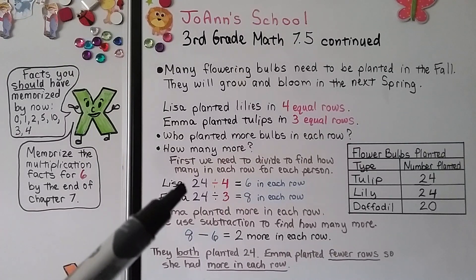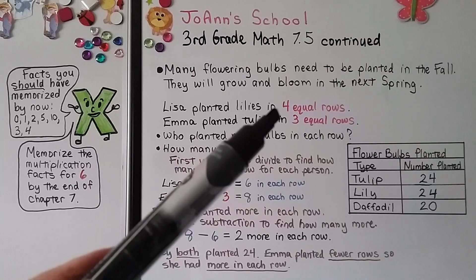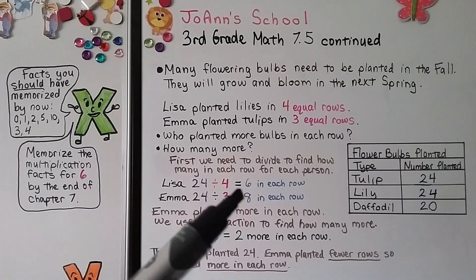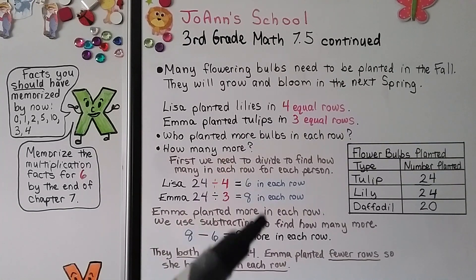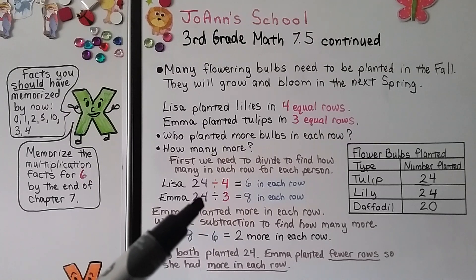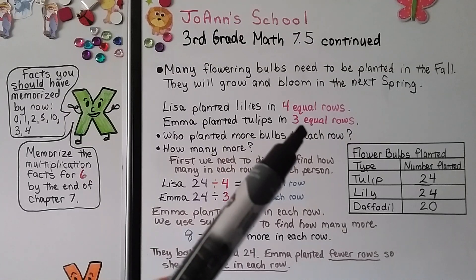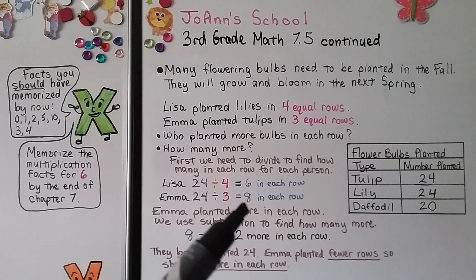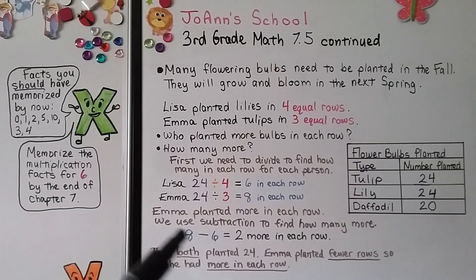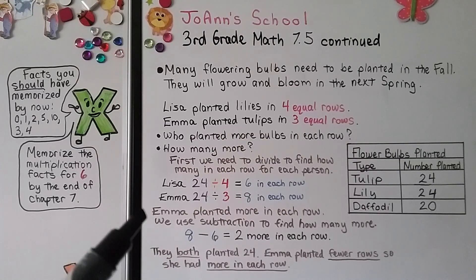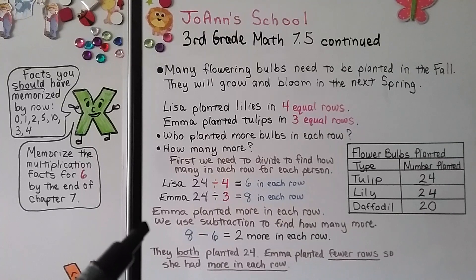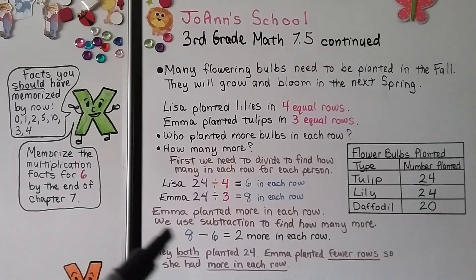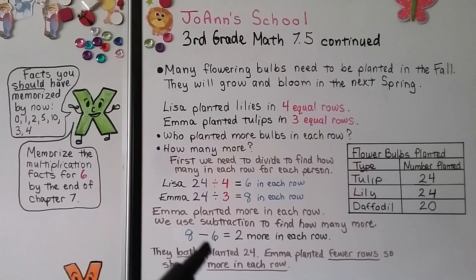First we divide to find how many in each row for each person. Lisa: 24 divided by 4 rows equals 6 in each row. Emma planted 24 in 3 equal rows, that's 8 in each row. So Emma planted more in each row. We use subtraction to find how many more: 8 minus 6 is equal to 2 more in each row that Emma planted.